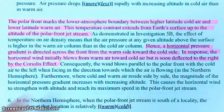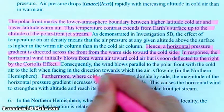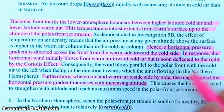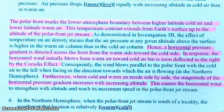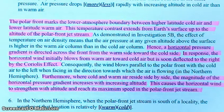The wind blows parallel to the polar front with the cold air to the left when facing in the direction towards which the wind is blowing. Where cold and warm air reside side by side, the magnitude of the horizontal pressure gradient increases with altitude — we saw that when we did exercise 5B. The pressure differences got bigger and bigger as we went up in altitude. This causes the horizontal wind to strengthen with altitude and reach its maximum speed in the polar front jet stream.